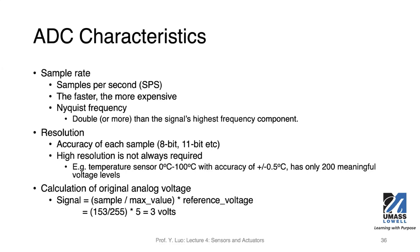Nyquist frequency is an important concept. Essentially, we need to have double or more than the signal's highest frequency component to properly understand the signal. So in the earlier example, we had a 9kHz signal, and we need to have at least 18k samples per second in order to properly understand the signal — basically get the analog signal converted to digital format to process it.